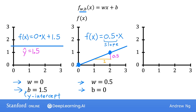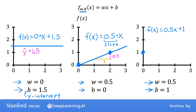Finally, if w equals 0.5 and b equals 1, then f of x is 0.5 times x plus 1. When x is 0, then f of x equals b, which is 1, so the line intersects the vertical axis at b, the y-intercept. When x is 2, then f of x is 2. Again, the slope is 0.5 divided by 1, so the value of w gives you the slope, which is 0.5.